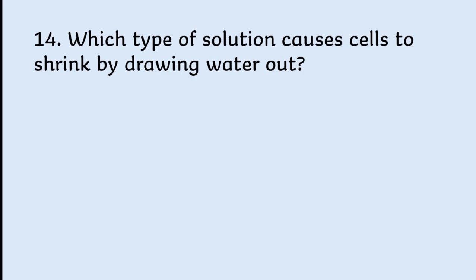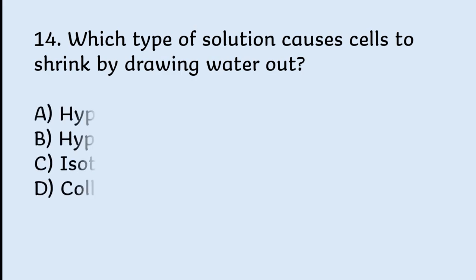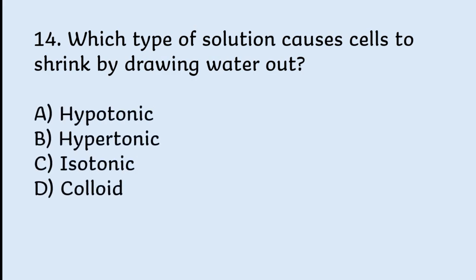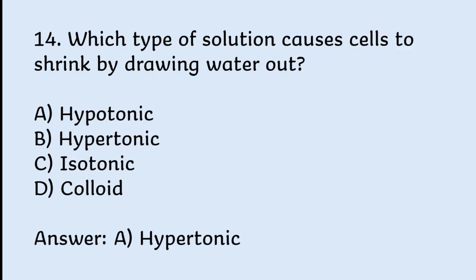Which type of solution causes cells to shrink by drawing water out? Options: hypotonic, hypertonic, isotonic, colloid. Correct answer is hypertonic.